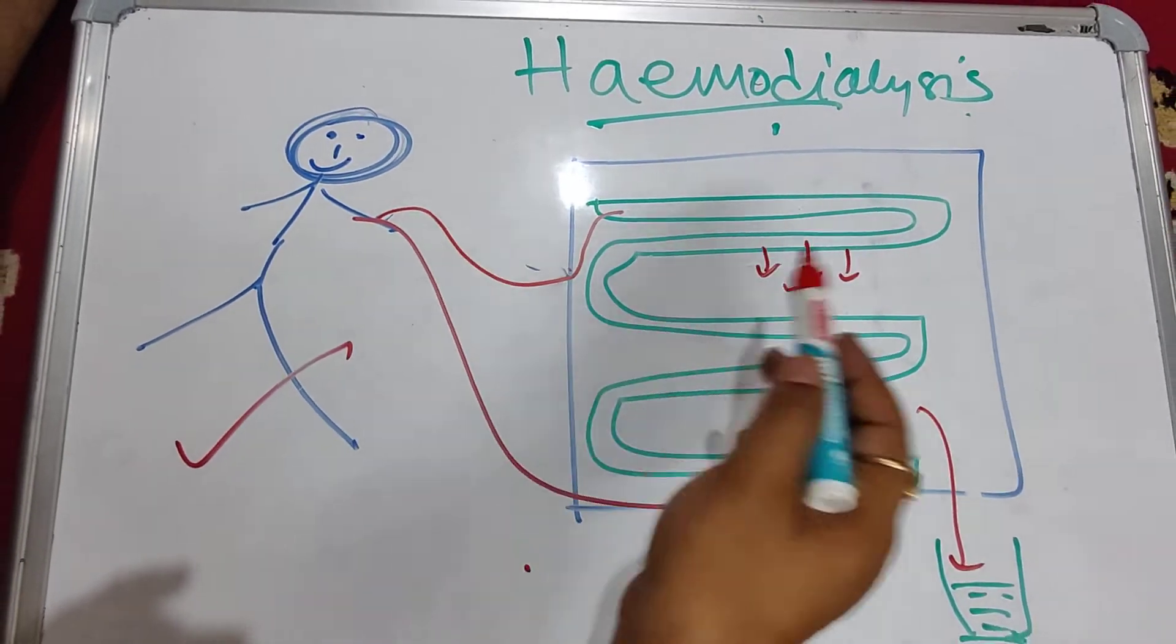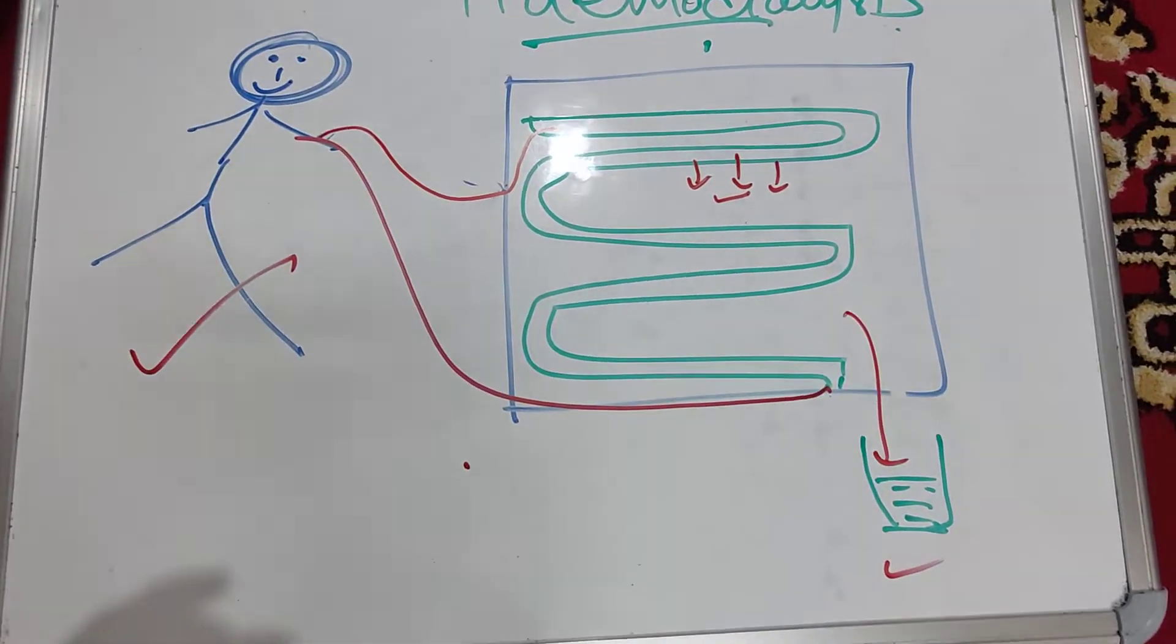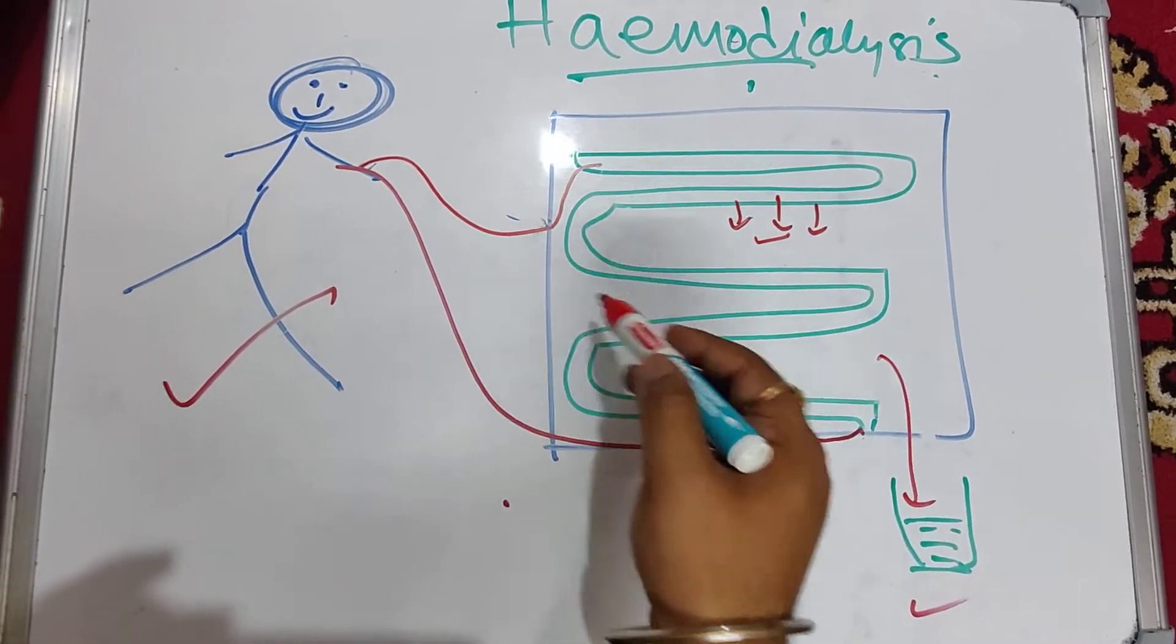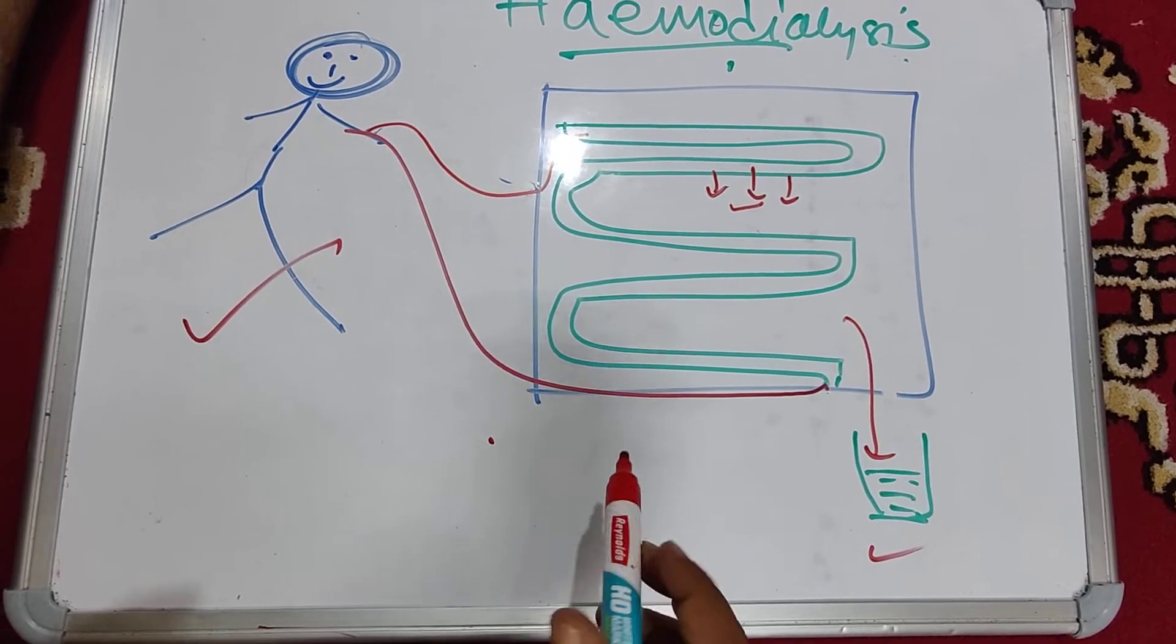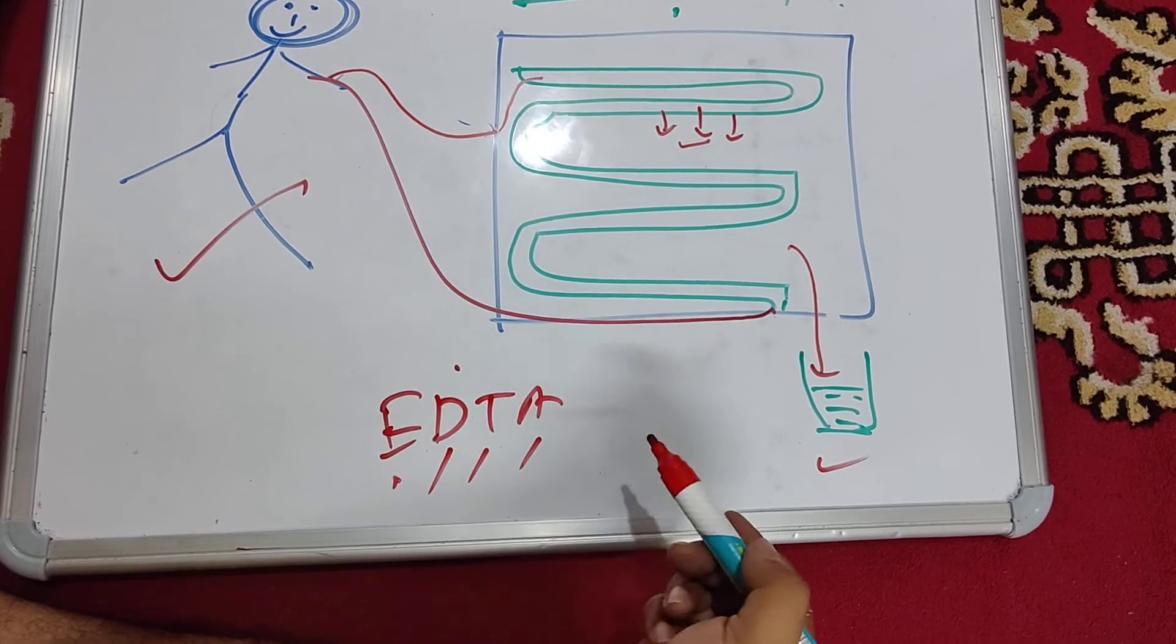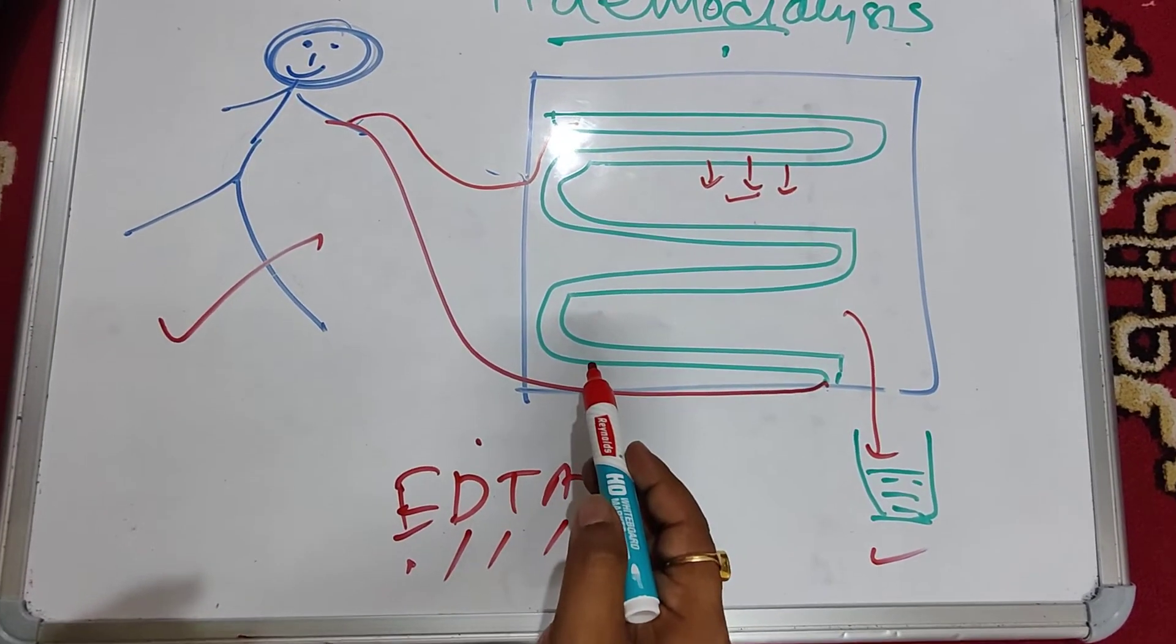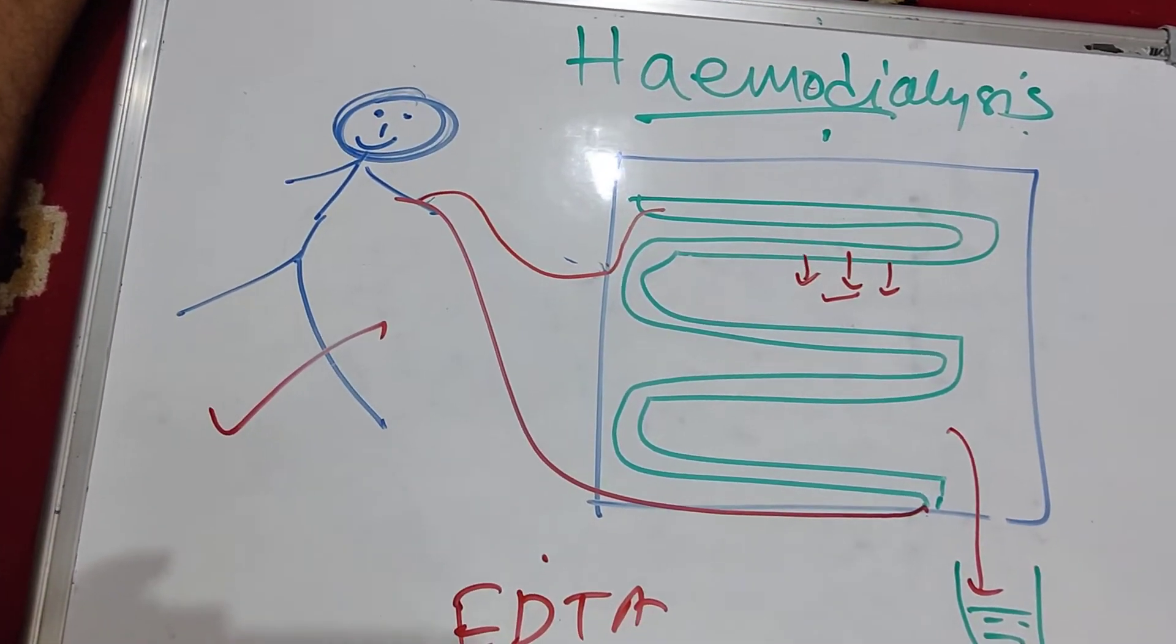Another issue: whenever blood comes out of our body, it should clot, but does blood clot here? No, because an anti-coagulating agent is given—EDTA (ethylene diamine tetraacetate). This is coated here so blood doesn't coagulate. But when blood goes back, do you want anti-coagulant inside the body?